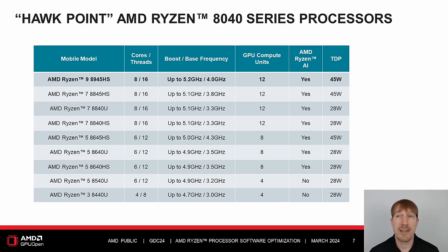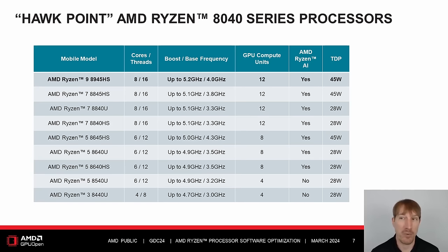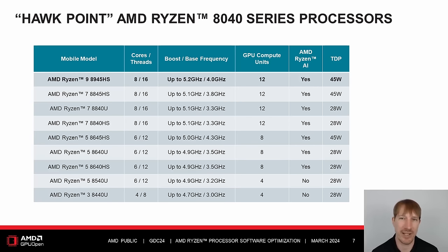The AMD Ryzen 8040 series mobile processors, formerly codenamed HawkPoint, are built on the cutting-edge 4nm process node delivering up to 14.5 hours of video playback. Not only do these processors include powerful Zen 4 cores, but they also include the highest performing integrated graphics thanks to RDNA 3. Better yet, they support Microsoft Windows Studio effects, powered by AMD Ryzen AI, our neural processing unit.